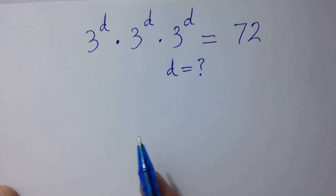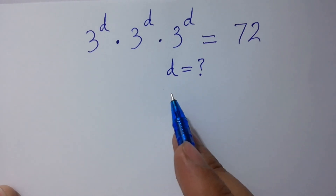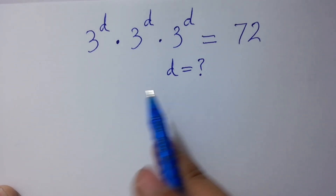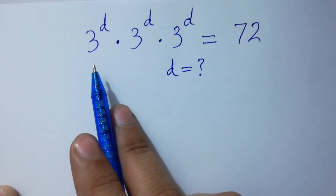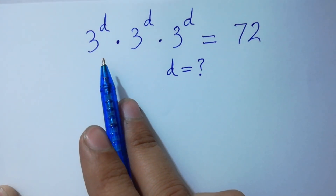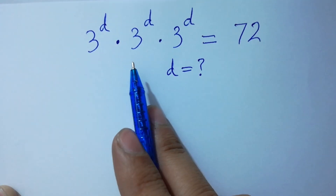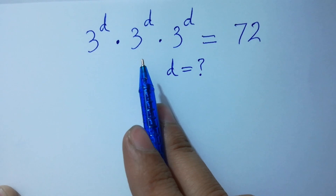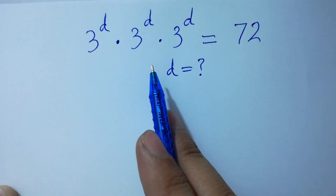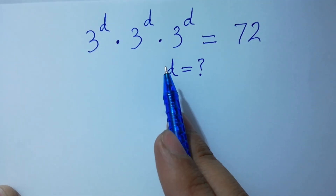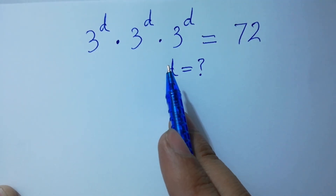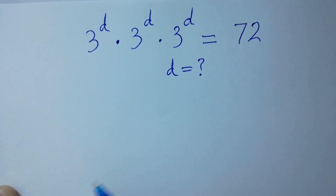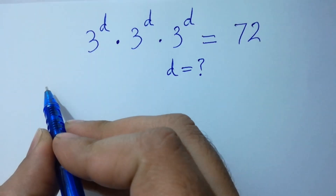Hello friends, find the value of d if 3 to the power d times 3 to the power d times 3 to the power d equals 72. Let's have a solution.